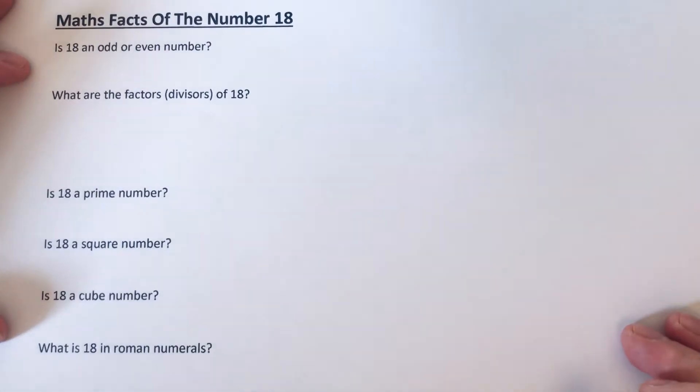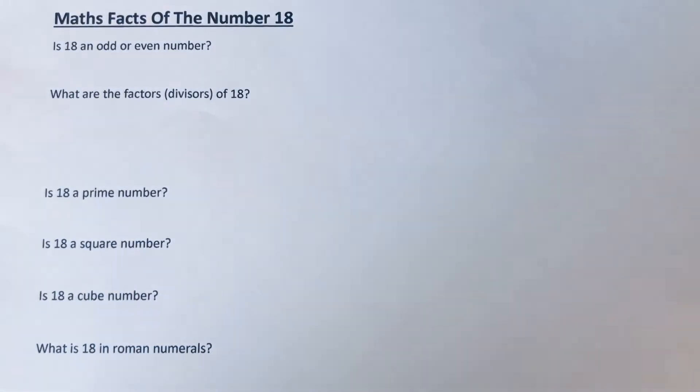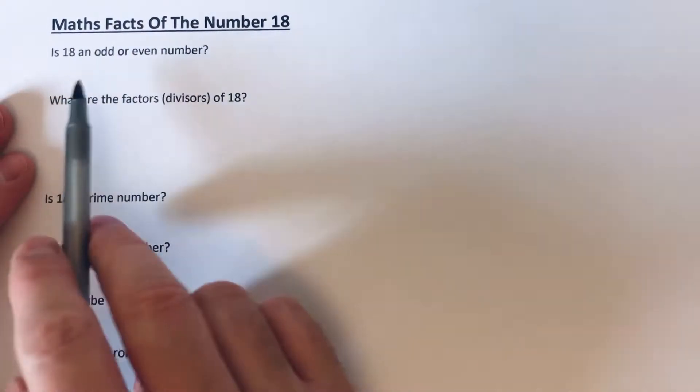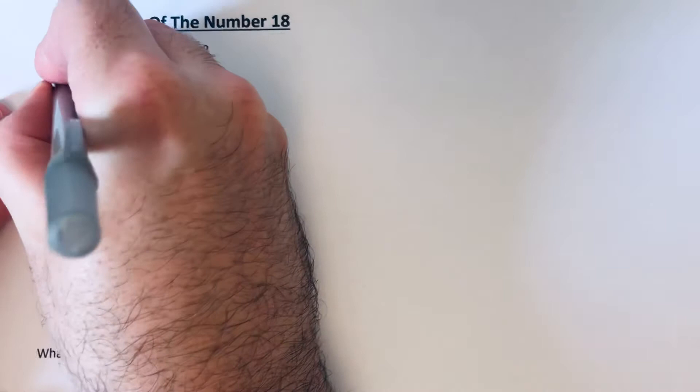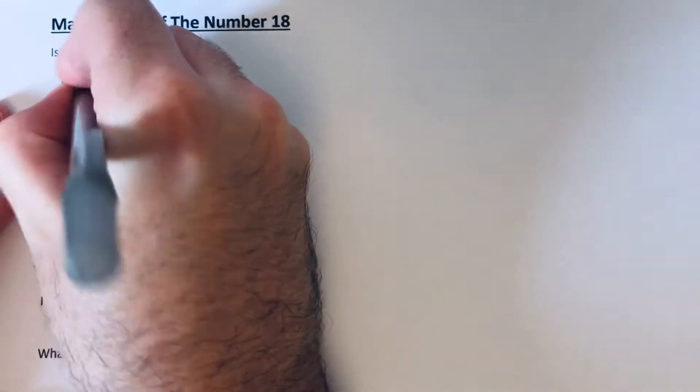Hi guys, welcome back. This is Maths 3000. Today we're going to look at the maths facts of the number 18. So our first question: is 18 an odd or even number? 18 is even because it's in the two times table, nine times two.